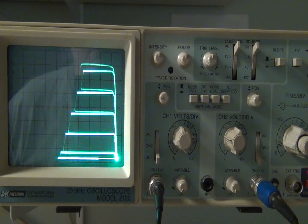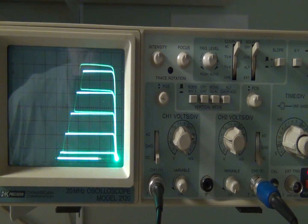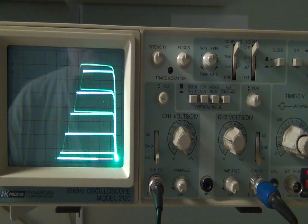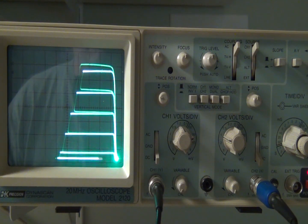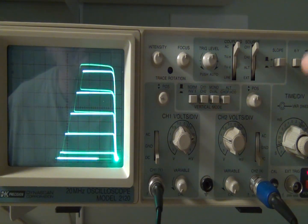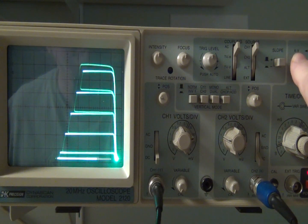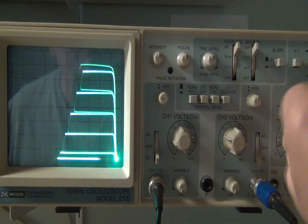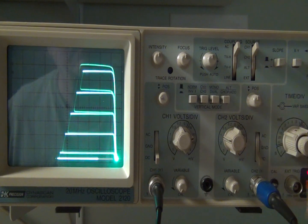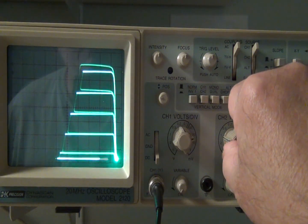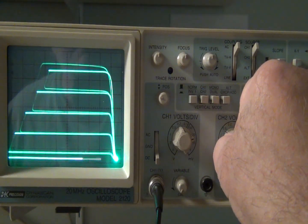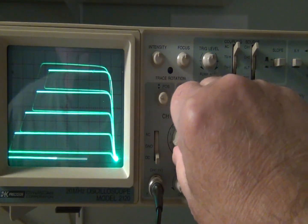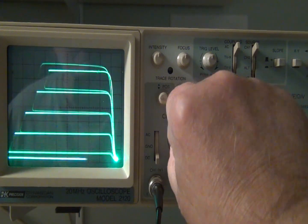Alright, so here's the transistor curve tracer on an analog scope. This is nothing very basic. It's a BK precision 20 MHz dual trace. So nothing special there. So I have the XY on. And so that means that this horizontal time per division does nothing. The channel 2 is controlling the horizontal.